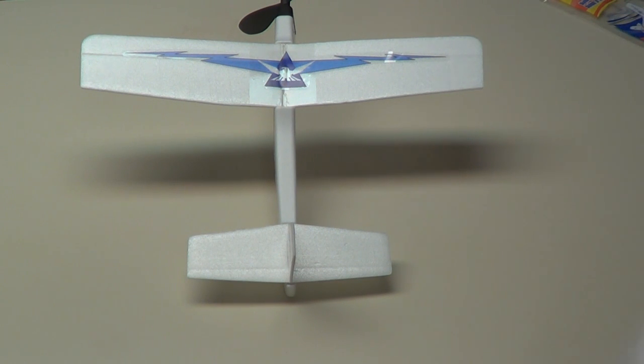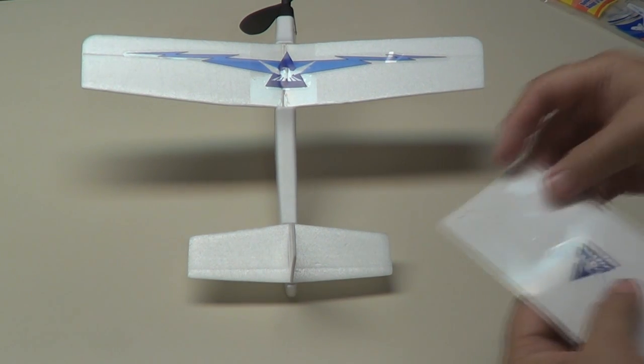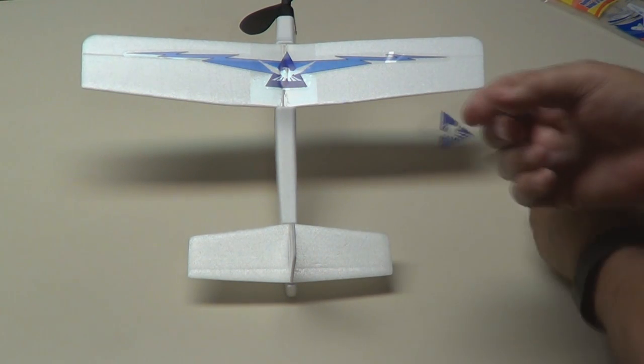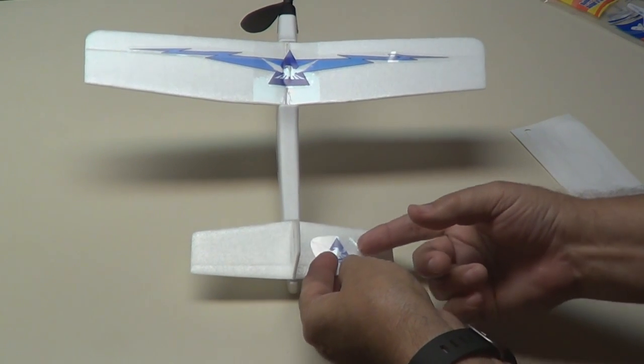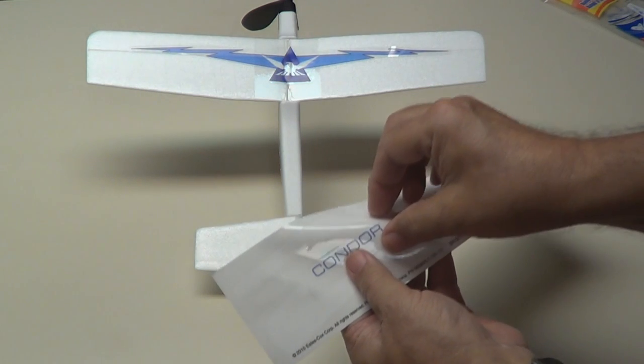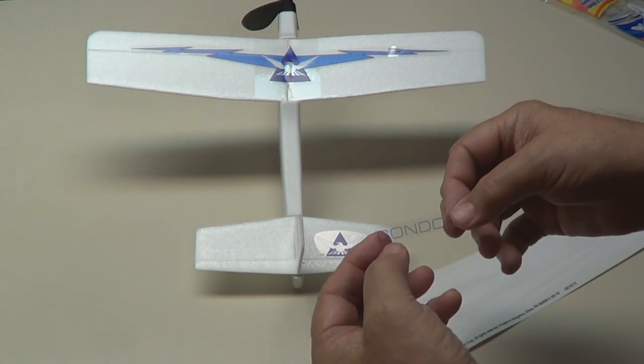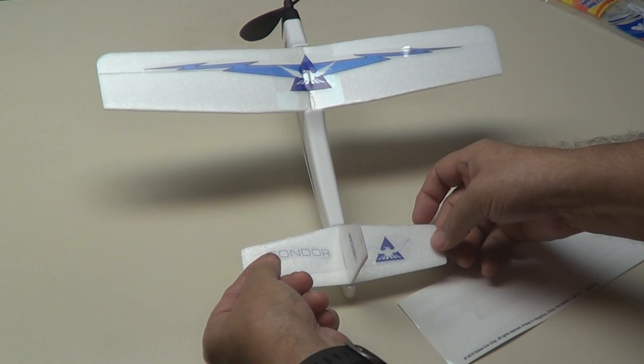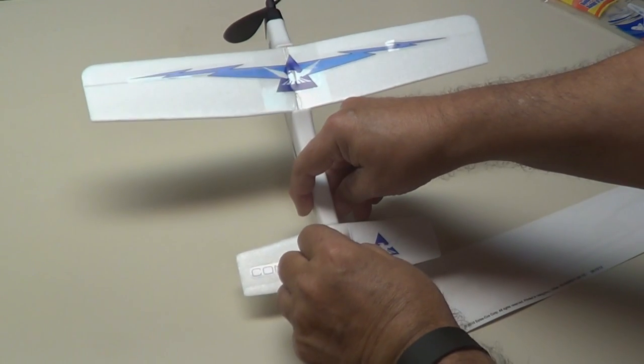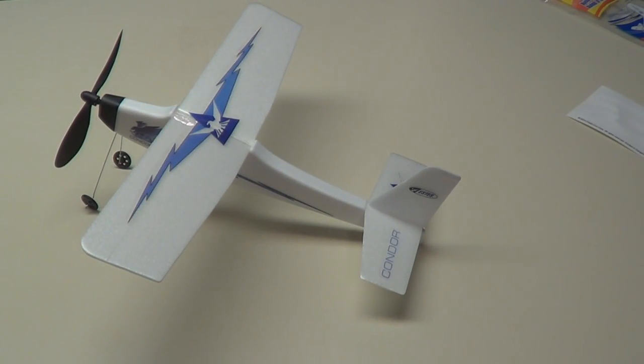Okay, now the decals on the elevator. This triangle goes on the right side, and the name Condor goes on the left side. So let's go fly it. We may try it indoor and outdoor.